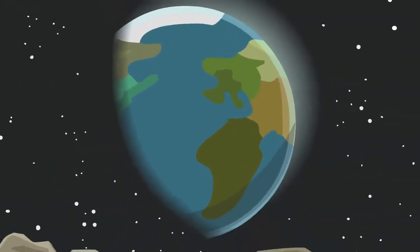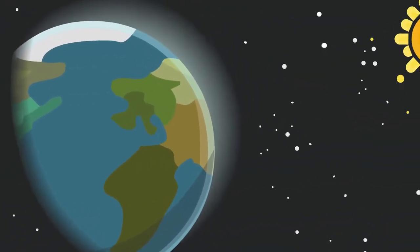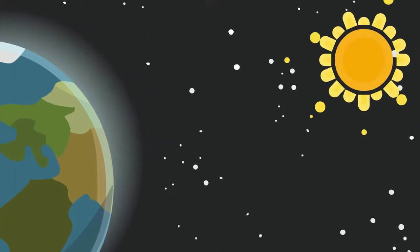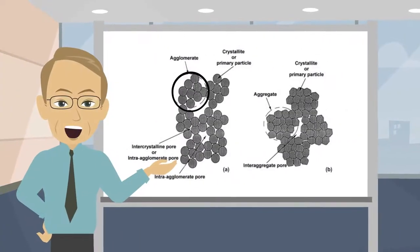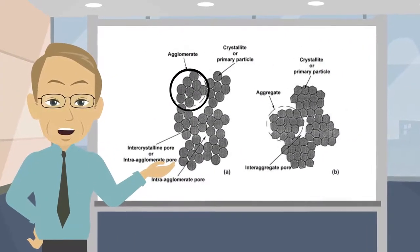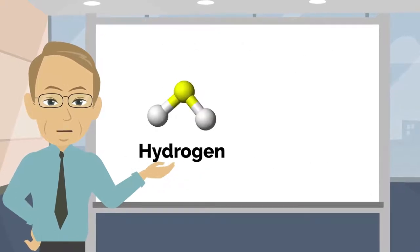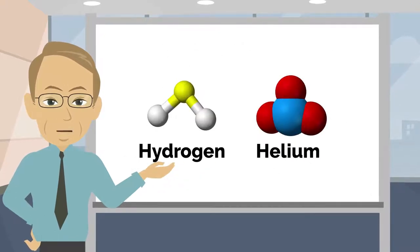To understand what is going to happen to the Earth when the Sun dies, you must first understand how a star like the Sun is created. Stars start their existence as massive agglomerations of gas, mostly hydrogen with a sprinkling of helium and a few other elements.